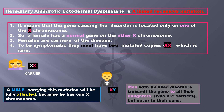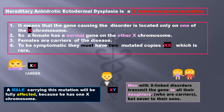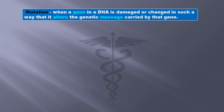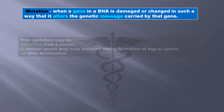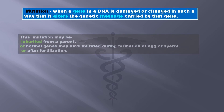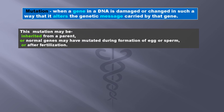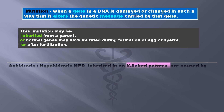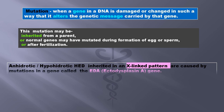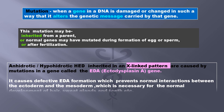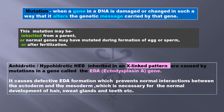Whereas a male carrying this mutation is fully affected since he has only one X chromosome. But men with X-linked disorder transmit the gene to all their daughters but never to their sons. Mutation occurs when a gene in a DNA is damaged or changed in such a way that it alters the genetic message carried by that gene. This mutation may be one inherited from a parent, or two normal genes may have mutated during the formation of egg or sperm, or three mutated after fertilization.